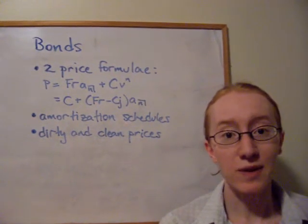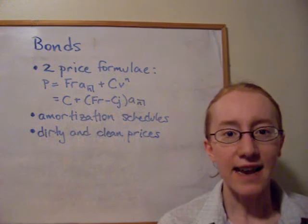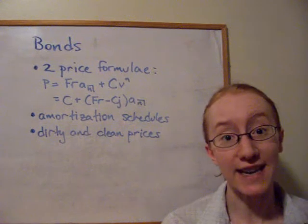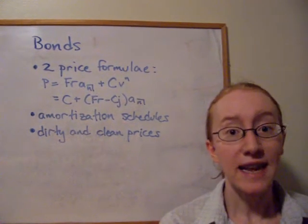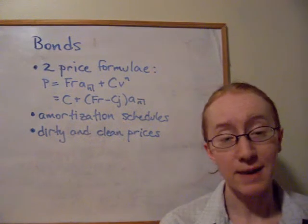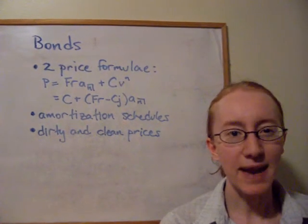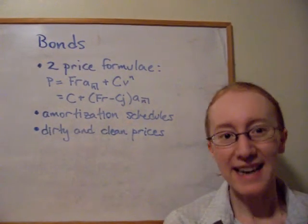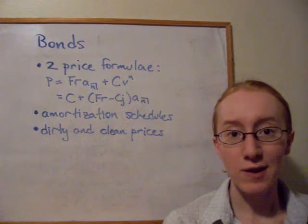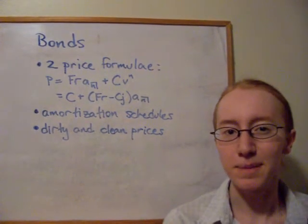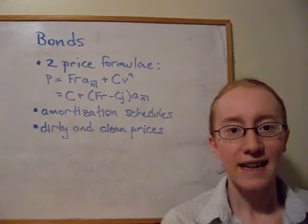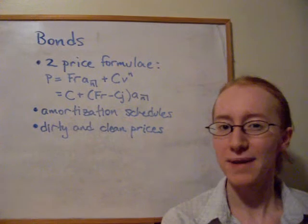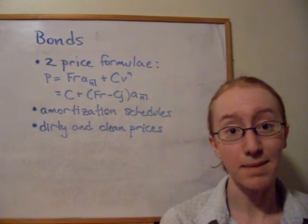We can interpret the principal repayment column slightly differently. If the bond is originally sold at a premium, the amounts in that column represent the premium write-down — as the bond gets closer to redemption, its value approaches the redemption value C, so the book value decreases with each coupon payment. Conversely, if the bond is priced at a discount, each coupon payment actually increases the book value of the bond, starting lower and increasing until it equals the redemption value C.